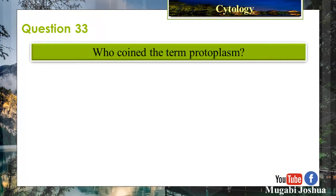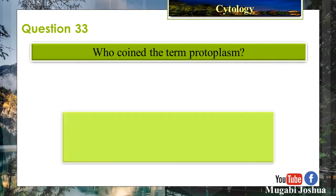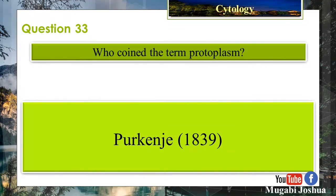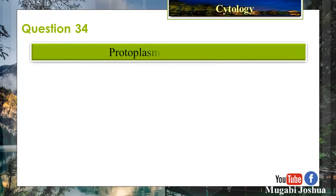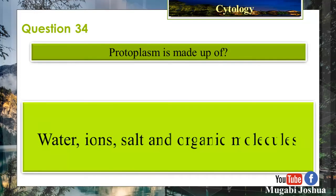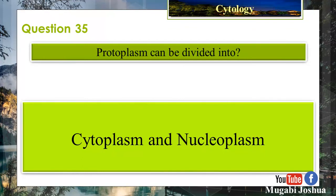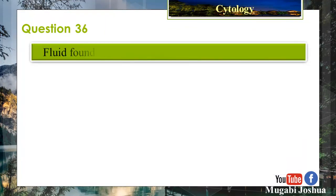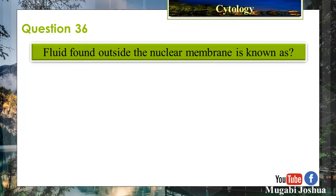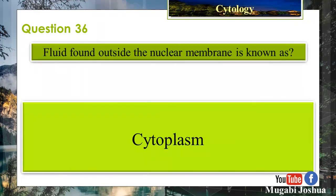Question 33: Who coined the term protoplasm? Purkinje in 1839. Question 34: Protoplasm is made up of water, ions, salts, and organic molecules. Question 35: Protoplasm can be divided into cytoplasm and nucleoplasm. Question 36: The fluid found outside the nuclear membrane is known as cytoplasm.